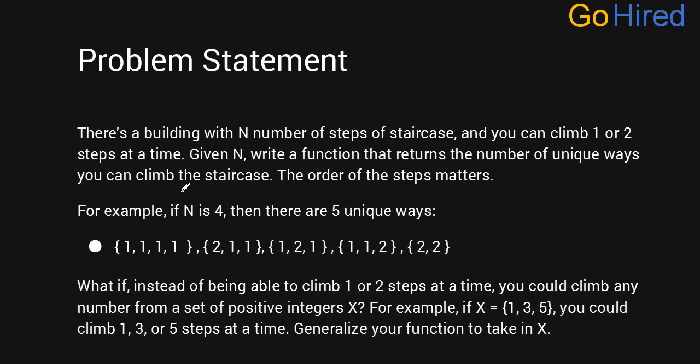Hello friends, welcome to GoHire. Today we are going to discuss a problem: you have a building with n staircases, you can take a jump of one or two staircases at a time, and you need to reach the nth staircase. In how many unique ways can you reach the nth staircase?